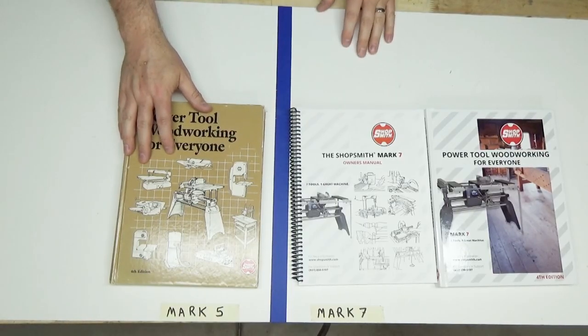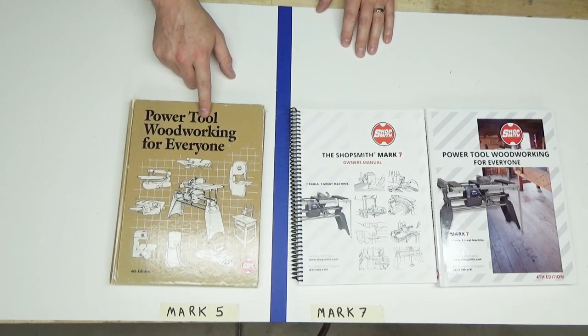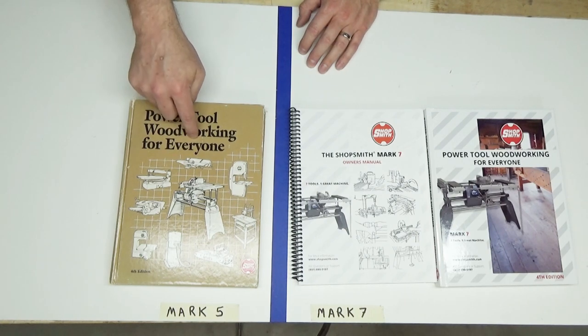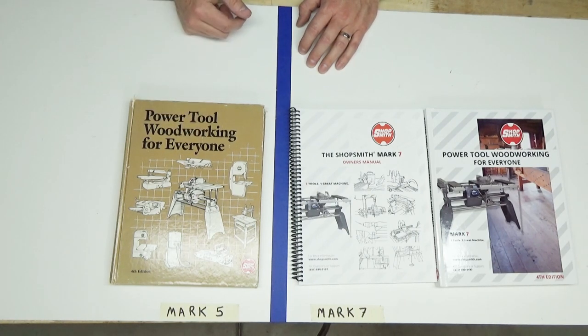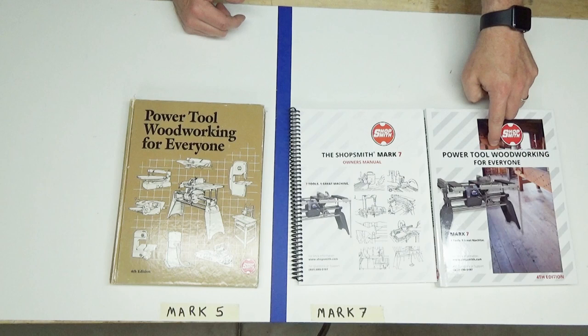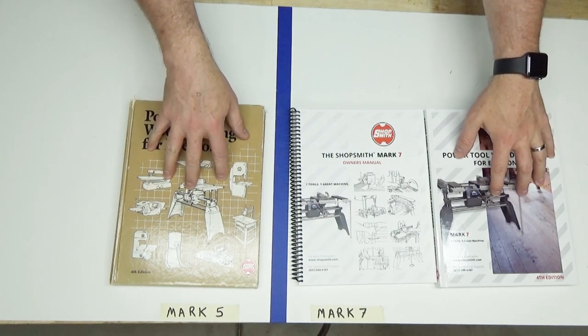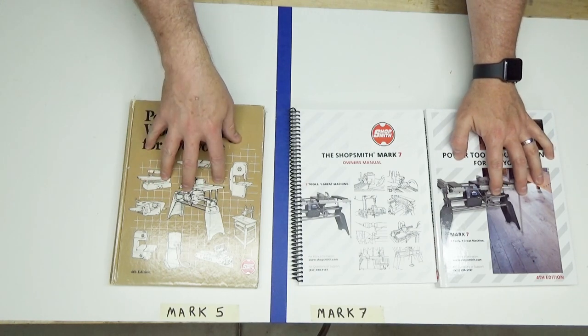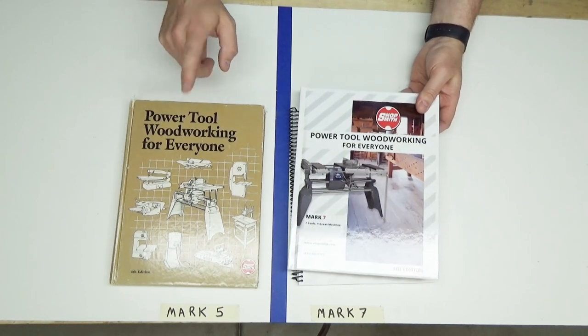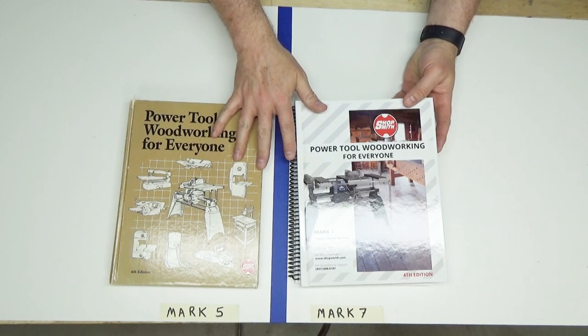My used ShopSmith mark 5 model 510 did not come with any documentation whatsoever. I bought this power tool woodworking for everyone copy I believe from Amazon and I believe it's representative of the version that would have come with my 1991 machine. My new ShopSmith mark 7 comes with both the owner's manual and a fresh copy of power tool woodworking for everyone although the contents of these two books are identical even though this one was produced in 1989 and this one was produced in 2022. I will add that having access to power tool woodworking for everyone has increased my enjoyment of these machines immensely.